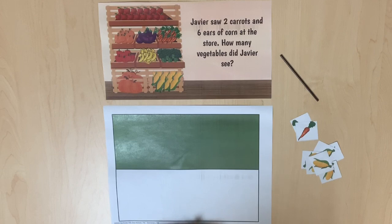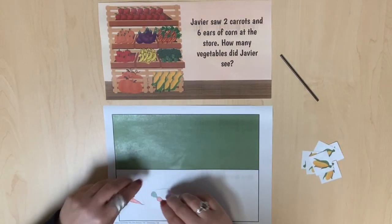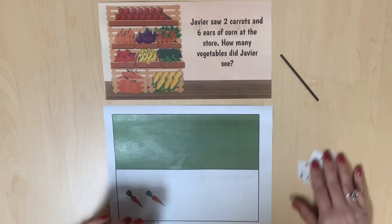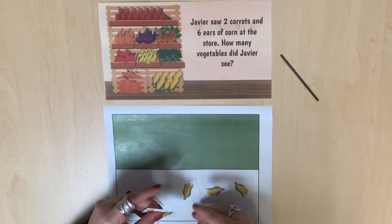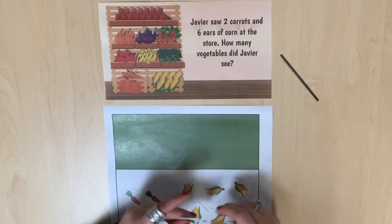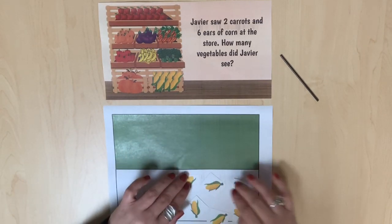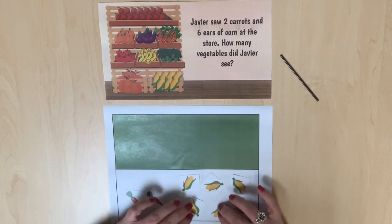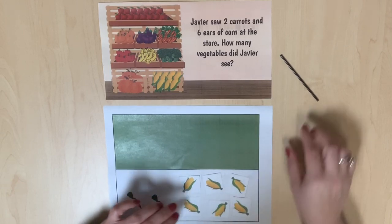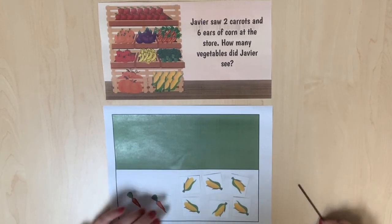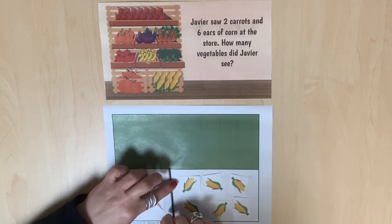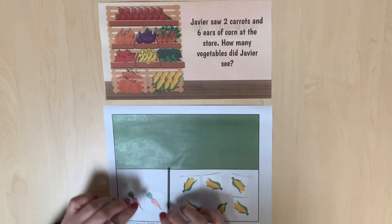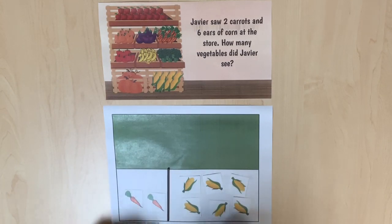If Javier has two carrots and six ears of corn, and students are using a part-part-whole work mat, support the understanding of the carrot part being smaller than the corn part.